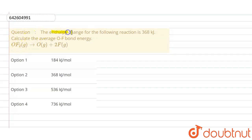The enthalpy change for the following reaction is 368 kilojoules. Calculate the average OF bond energy.